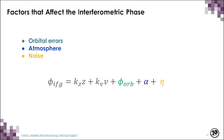In practice, the interferometric phase not only has the two terms related to topography and displacement; there are also other effects due to orbital errors — from not knowing the exact position of the satellites — atmospheric effects, or noise. These terms will be briefly explained so you can identify when they appear and not confuse them with actual information related to topography or deformation.